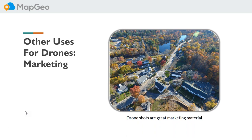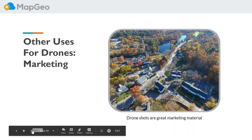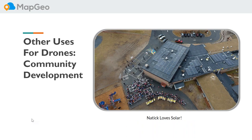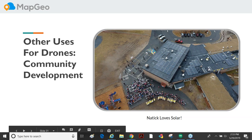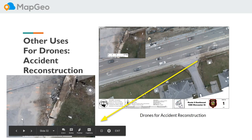Marketing shots — fall and springtime in New England is really pretty, so we fly around the town and get shots promoting it. We also collaborate with the school department — they had a solar project putting panels on the roofs of all the schools. I put the drone up and get the kids holding a sign down there that says 'Natick Loves Solar.' It's a win-win — we give them something, they get something out of it. That's actually my elementary school I went to as a kid.